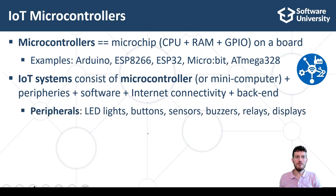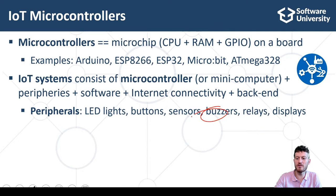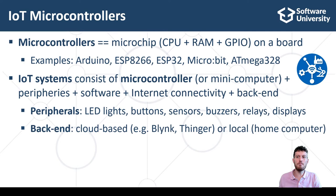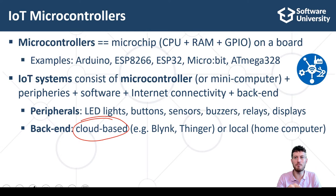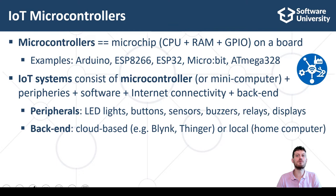Typical peripherals for microcontrollers include LED lights, buttons, sensors, buzzers, relays, displays, and many others. These peripherals are used to collect data, communicate with the user, and control other devices. The backend is an important component of IoT systems and could be cloud-based — for example, the Blynk and ThingSpeak platforms — or local, such as a network-connected home computer. The microcontroller talks with the backend system to send data and accept commands.